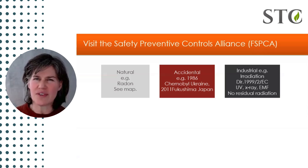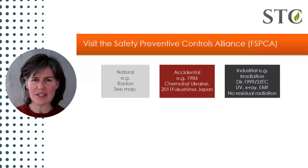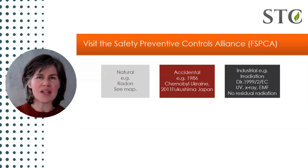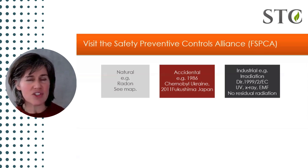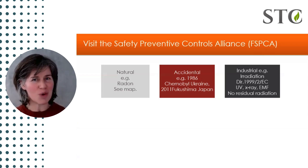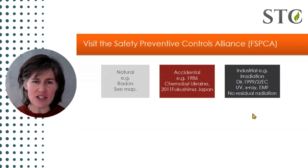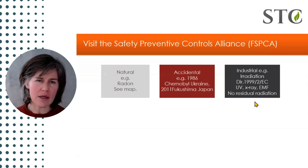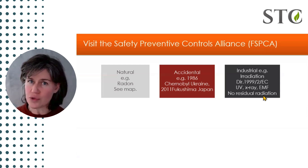All such devices emit certain levels of electromagnetic frequencies. There are laws that govern the type of shielding that manufacturers of these devices need to use so that it's not excessively unsafe to the user. Regarding these sources of radiation — UV, X-ray, and EMF — none of them are harmful to food or packaging because they leave no residue.